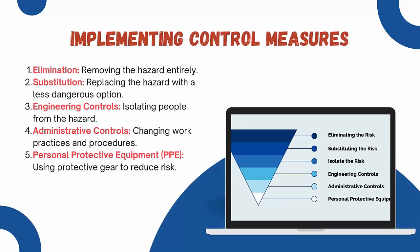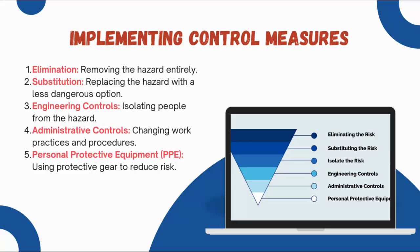Implementing control measures is essential for risk management. These include: elimination — removing the hazard entirely; substitution — replacing the hazard with a less dangerous option; engineering controls — isolating people from the hazard; administrative controls — changing work practices and procedures; and PPE or Personal Protective Equipment — using protective gear to reduce risk. These measures help in mitigating risk and ensuring a safe work environment.